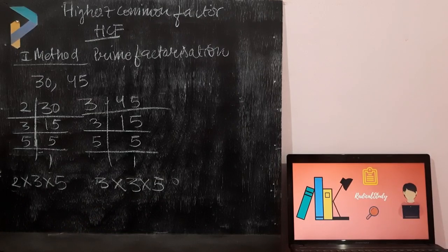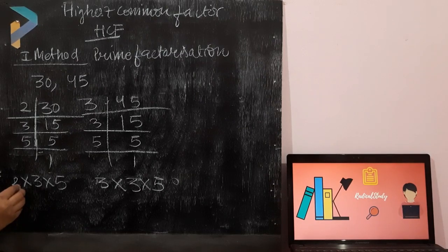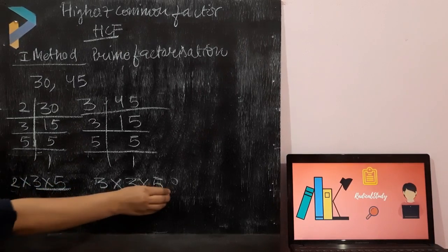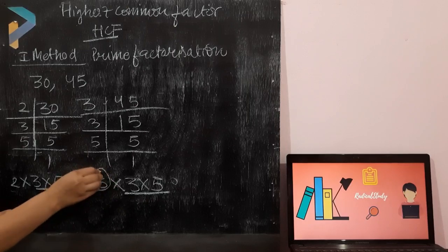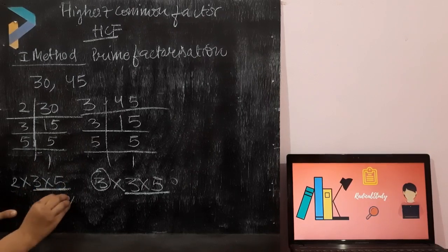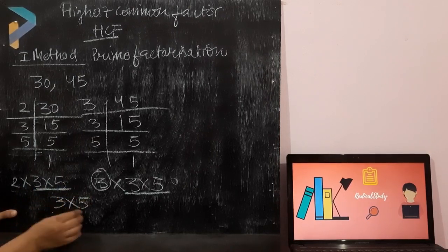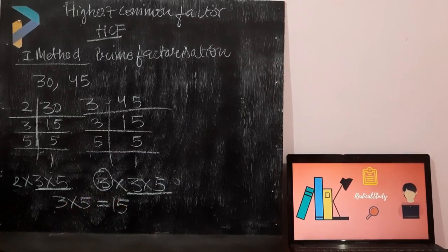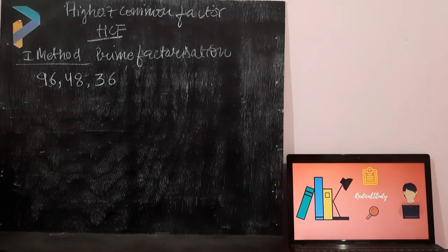Now we find the common factors. In 30 = 2 × 3 × 5 and 45 = 3 × 3 × 5, the common part is 3 × 5. The number 2 is in 30 but not in 45, so we take only the common numbers. Since 3 × 5 is common in both, the HCF of 30 and 45 is 15.